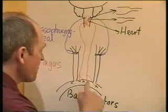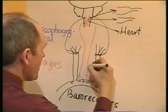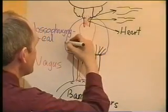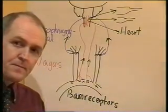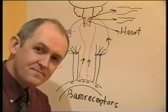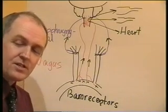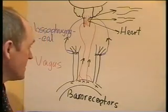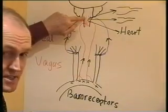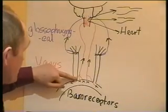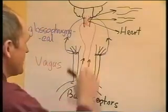Now all the time there's pressure in the aorta and the carotid arteries, there's going to be impulses going up the vagus nerve and up the glossopharyngeal nerve towards the vasomotor centre. The higher the blood pressure, the more nervous impulses are going to go from the baroreceptors to the brainstem. When the blood pressure is low, there's less impulses that go from the baroreceptors to the brainstem.